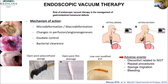Endoscopic vacuum therapy — I really love this approach. We are working on the modified endoscopic vacuum therapy. What is great about vacuum is the mechanism of action: you have micro-deformation, and with that you're going to have angiogenesis, improving perfusion. Also, with the vacuum, you can have exudate control and bacterial clearance. It's a really good technique. Of course, there is discomfort from the nasal gastric tube and you need more procedures, but it works very well for very severe cases.